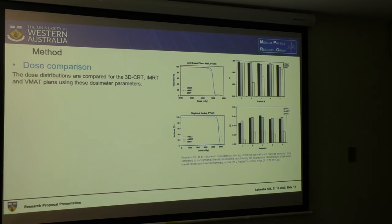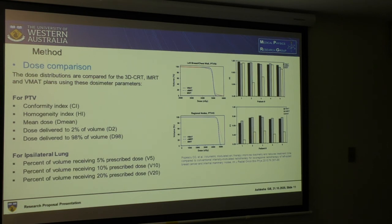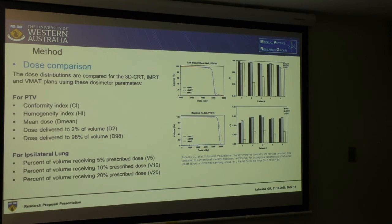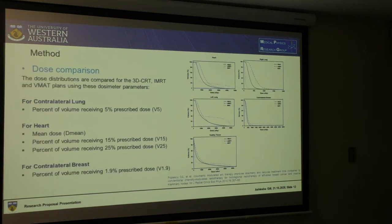After we have measured the dose, we need to compare the dose for the different plans. For PTV, parameters include conformity index, homogeneity index, mean dose, and parameters like D2 and D98 — meaning dose delivered to 2% of the volume. For organs at risk, we use parameters like V5 and V10, where V5 is the percentage of volume receiving 5% of the prescribed dose, and V10 similarly for 10%. These parameters vary depending on the organ — spine, heart, or lung.